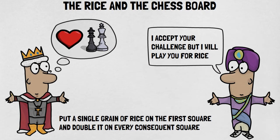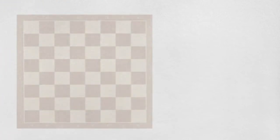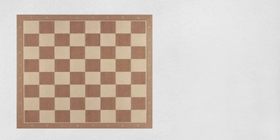The king was to put a single grain of rice on the first chess square and double it on every consequent one. The king accepted the sage's request. After the game was played and checkmate was called, the king was defeated.